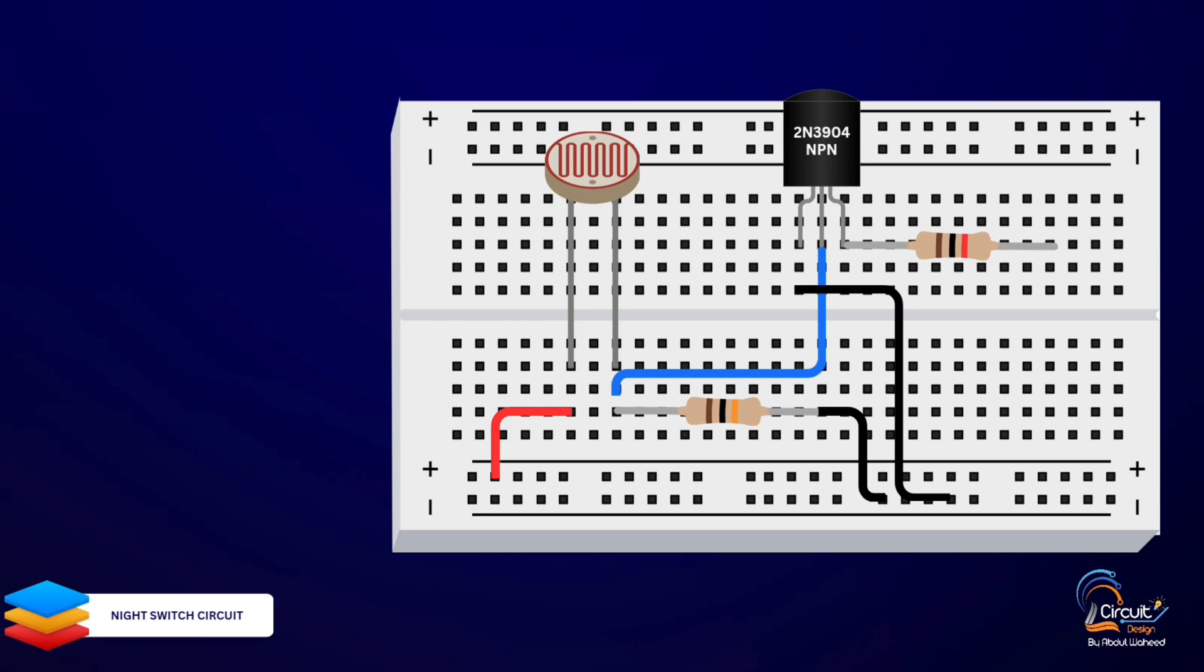This resistor limits the current flowing through our light emitting diode. Connect the positive leg, the longer one, of the LED to the other end of the 1 kOhm resistor. The negative leg of the LED goes to the negative rail. Final connections.